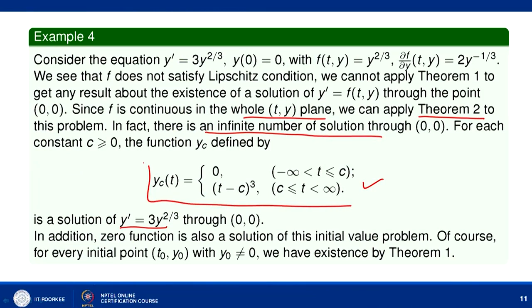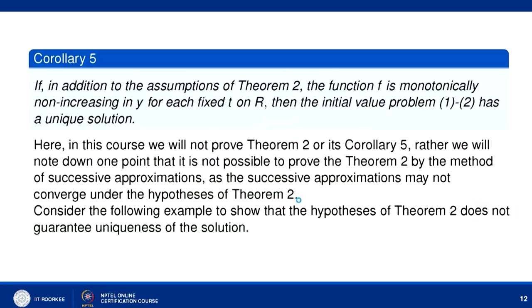If we consider a rectangle where y₀ = 0, we lose uniqueness. In fact, we have a one-parameter family of solutions given by y_c(t), and we can define a two-parameter family as well. Moving on: what we have done is remove the Lipschitz condition on f, and consequently we have no guarantee that the solution is unique.